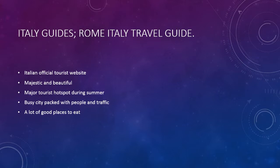Rome Italy travel guides, which is the official Italian tourist website, classifies Rome as a majestic and beautiful city which can be confusing for first-time visitors. They also explain how the city can be overcrowded during summer due to over-tourism, and their pictures show how the city is packed with people and vehicles, which suggests it may also be dirty due to so many people concentrated in a small area.